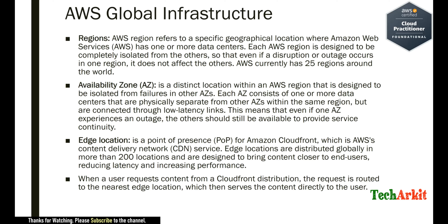This means that even if one availability zone experiences an outage, the others are still available to provide service continuity. That is the high availability you have between availability zones — if one zone goes down, another zone has full control to maintain those services and resources.